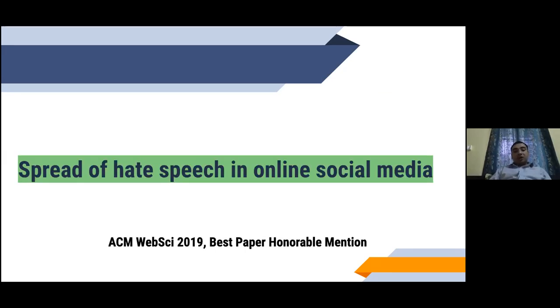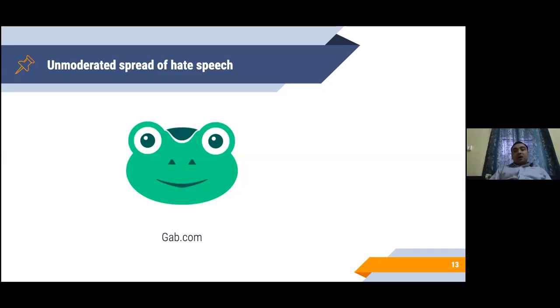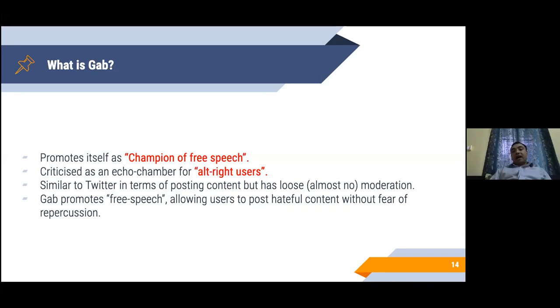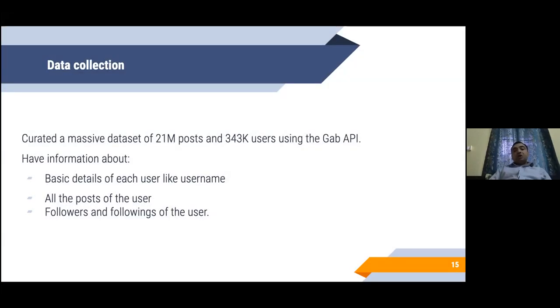The first one I'm going to talk about is spread of hate speech in online social media. This was published last year in the ACM website. I'll introduce you to an upcoming social media platform which is called Gab. This platform actually promotes itself as a champion of free speech. It has been typically criticized as an echo chamber for alt-right users. Most of its features are like Twitter, but with much less moderation than Twitter. We curated a massive dataset of around 21 million posts and 343,000 users by crawling the Gab API.